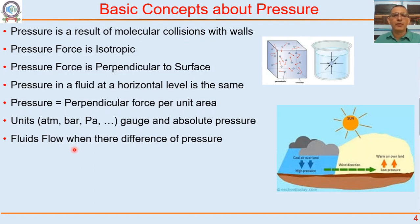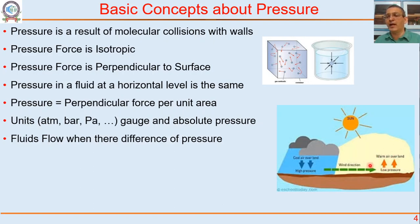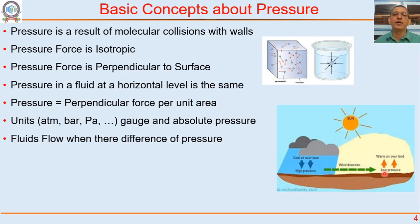Fluids flow when there is a difference of pressure. For example, atmospheric flows — wind. During the day, the sea is cooler while land gets hotter, so local pressure over land is lower and over the sea is higher. This gives rise to wind flowing from sea to land, and these winds carry moisture, which causes monsoon. For flow to happen, we require a pressure difference, which can also arise from gravity.